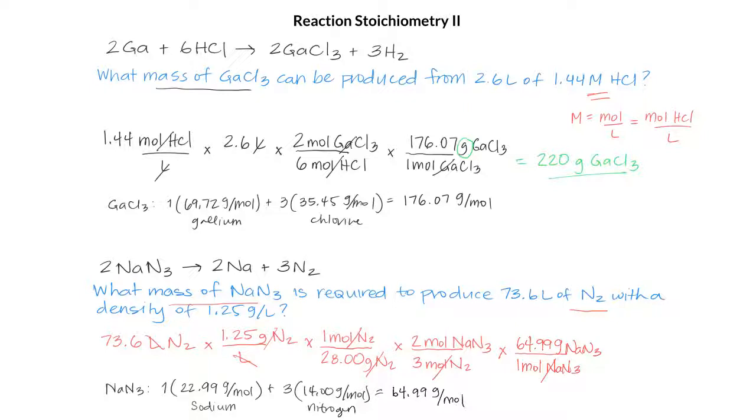Our moles cancel, and we are left with grams of NaN3. We do the math, and we end up with 142 grams of sodium azide that's required to produce 73.6 liters of nitrogen gas.